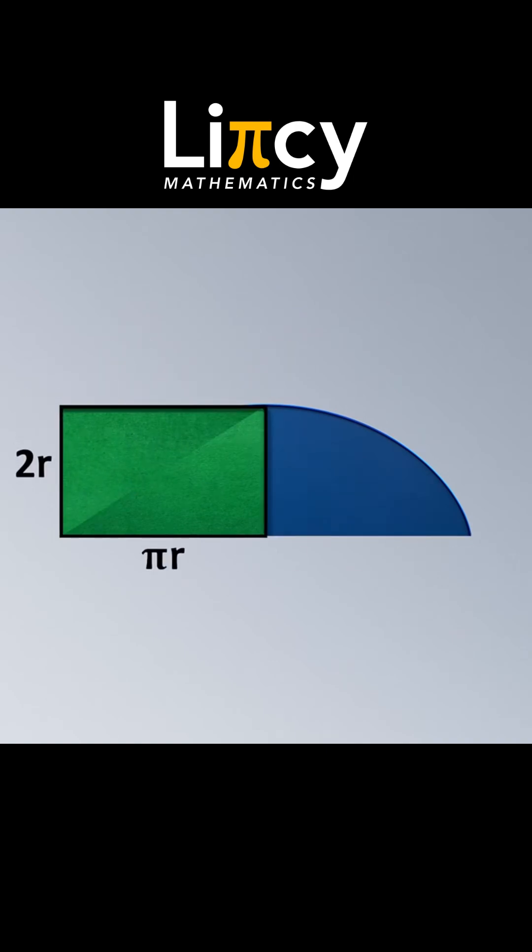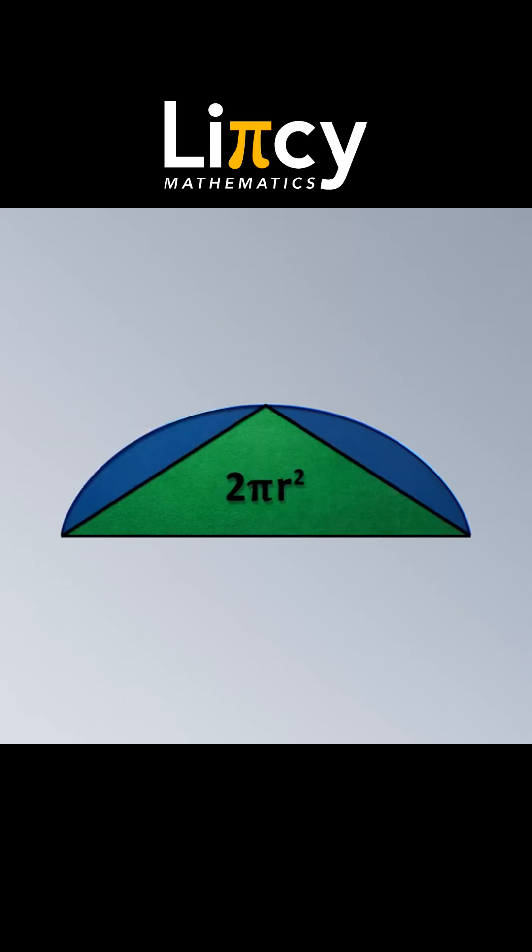For the time being, let's ignore the curving sides and trace out edges from the top center of the shape to the bottom corners, making a triangle. The triangle has a height of 2 radii and a base of 2 pi radii.